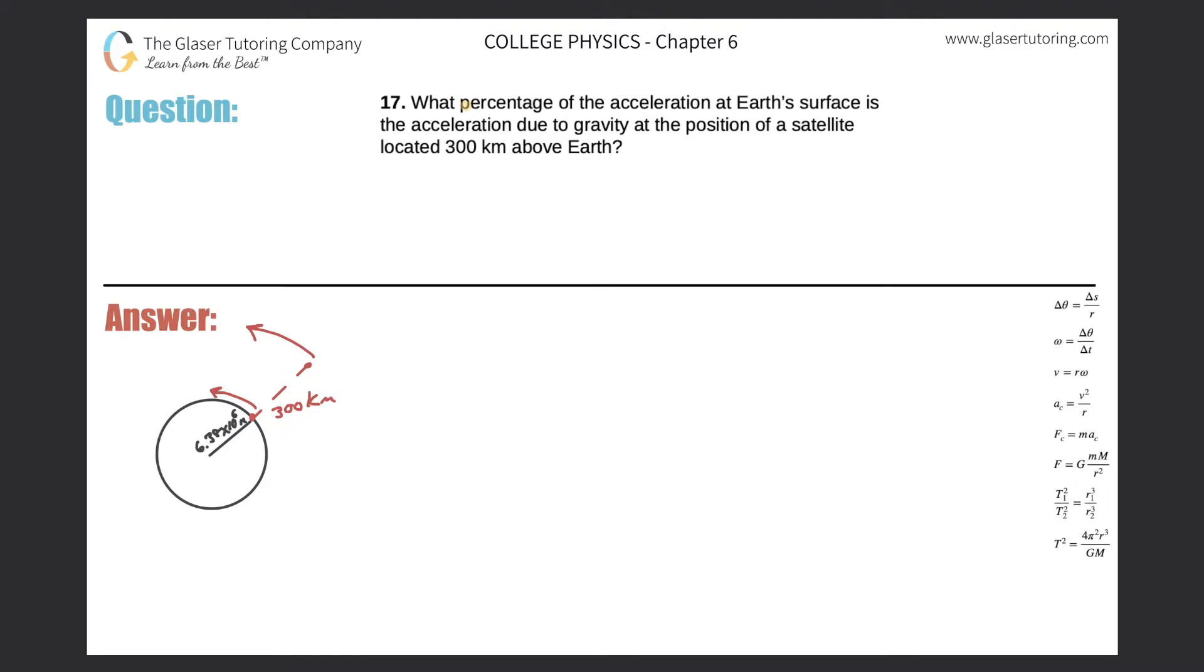Number 17. What percentage of the acceleration at Earth's surface is the acceleration due to gravity at the position of a satellite located 300 kilometers above Earth? Alright. So here we have a picture. Here's the Earth in black.